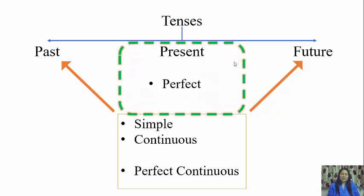In simple present, you studied that we use it for things we do regularly out of habit or which are facts. In present continuous, we use it for actions taking place right now or these days. Today you are going to study present perfect, which is used for things that have been completed recently in the past and which have an effect on our present time. You will study the uses and then understand how it has an effect on the present.